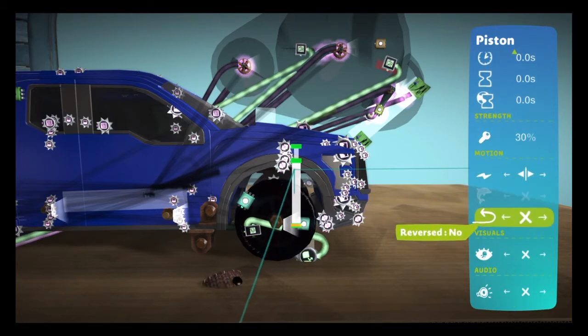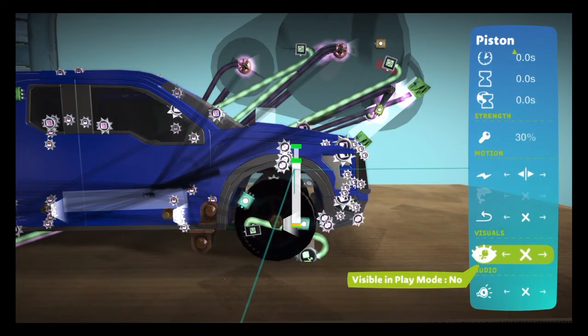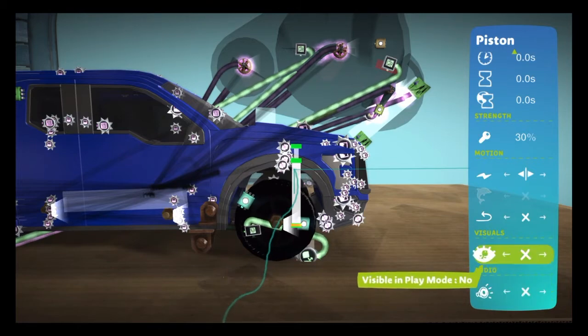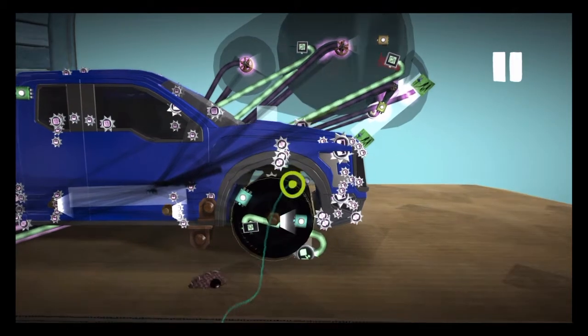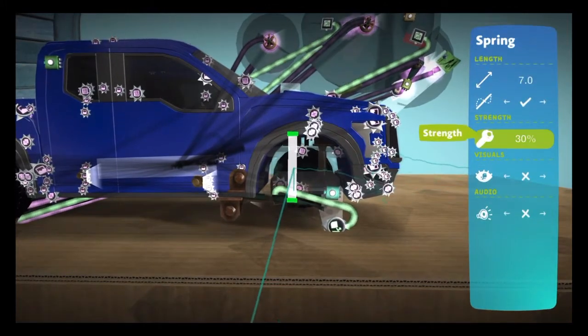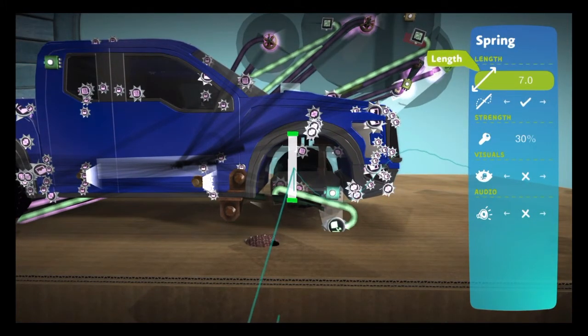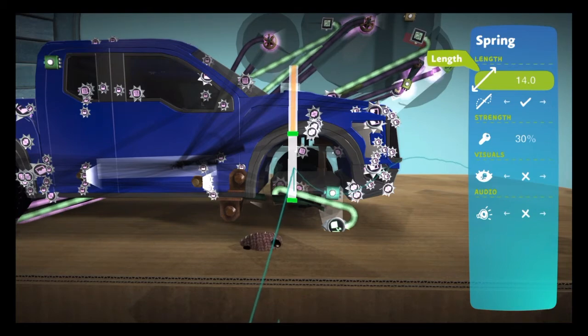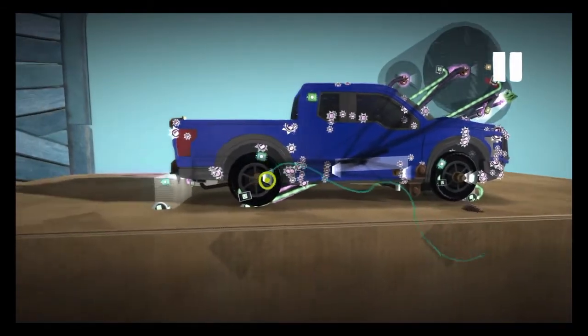It doesn't matter whether you have it positional or directional, but I usually tend to use positional when it comes to my suspension. Make sure the reverse is off. And obviously you don't want it to be visually there, or else it's not going to look too good. Then the spring, you'll want to make sure it's weak.